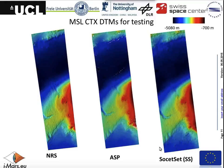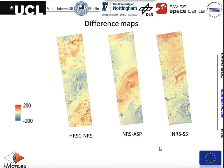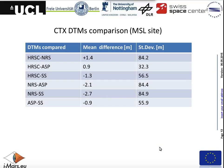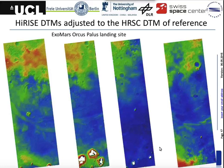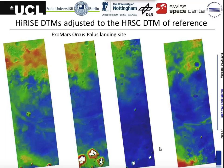We also used Socet Set DTMs to compare with the AMIS stereo pipeline-based and our non-rigorous sensor model-based results. They look very similar, but when you compare them you see a lot of dispersion and some differences. We have chosen the system based on the AMIS stereo pipeline, which is simpler, because the first system is working okay but it is not as robust. The rational polynomial coefficients sometimes become singular and diverge, creating problems, so it cannot be used for processing thousands of images as we plan to do.